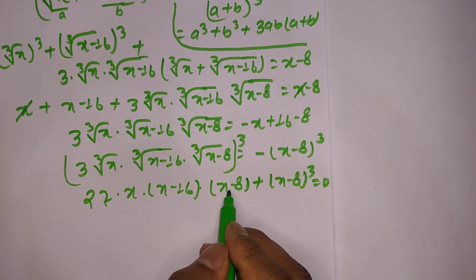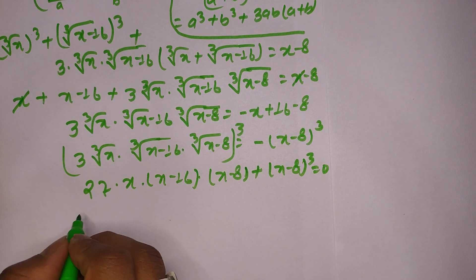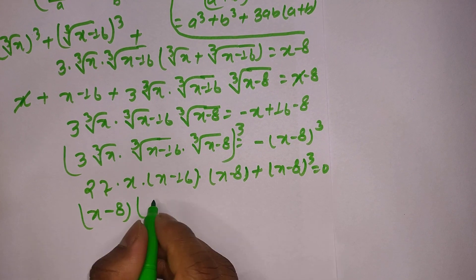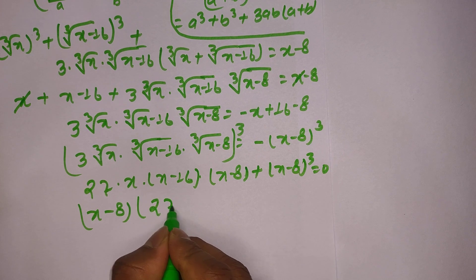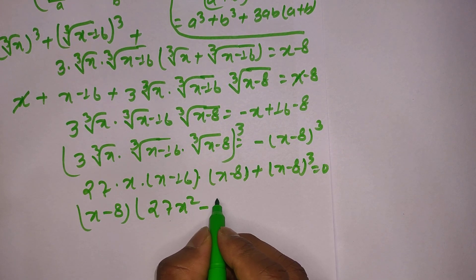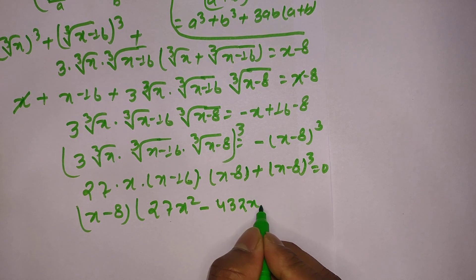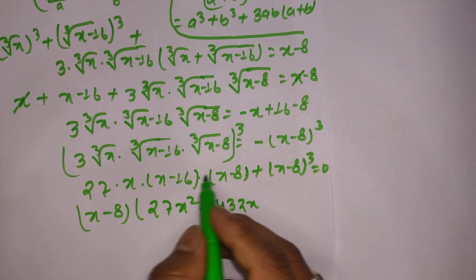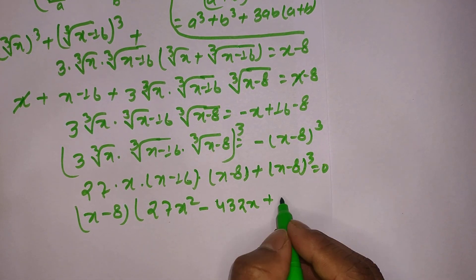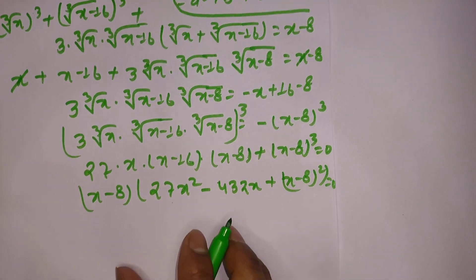(x minus 8) is a common factor from these two terms, so we factor it out. We are left with 27x times (x minus 16) — expanding: 27x² minus 27x times 16 equals 432x — and plus b squared that is 16x plus the common (x minus 8)², which equals 0.